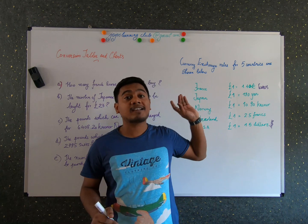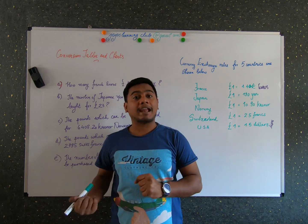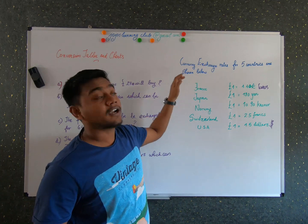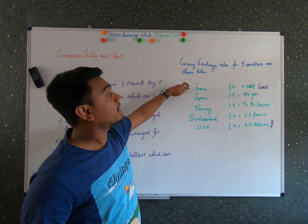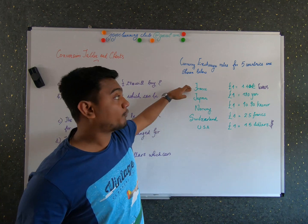So let's do an example with the currency exchange rate for 5 different countries and let's do some calculations using that. So my question is currency exchange rate for 5 countries are shown here. For the countries France, Japan, Norway, Switzerland and USA.